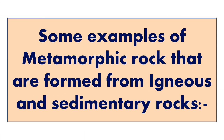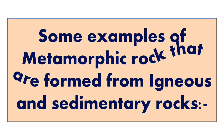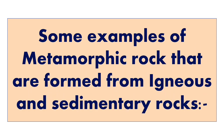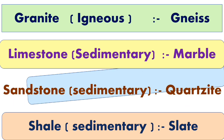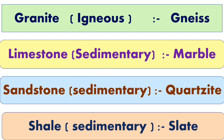Let's see some examples of metamorphic rocks formed from igneous and sedimentary rocks. Granite, which is an igneous rock, forms into gneiss. Limestone, which is a sedimentary rock, changes into marble under tremendous heat or pressure. Sandstone, also a sedimentary rock, changes into quartzite. And shale, also a sedimentary rock, changes into slate.